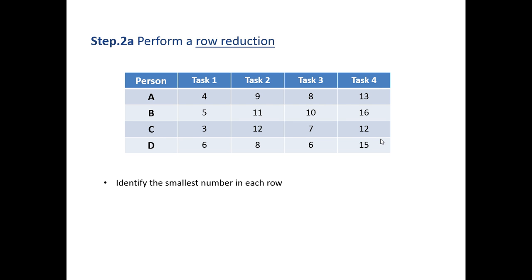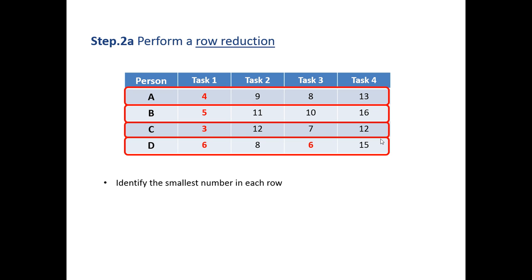We commence with a row reduction. For each of the rows we identify the smallest number. In the first row, 4 is the smallest; second row, 5 is the smallest; third row, 3 is the smallest; and fourth row, 6 is the smallest, even though it occurs twice.